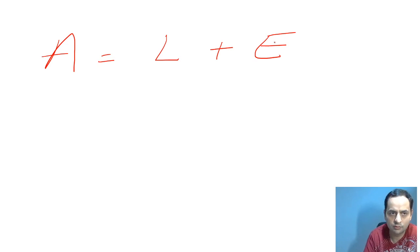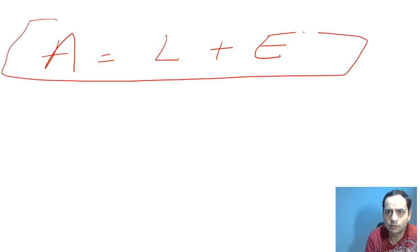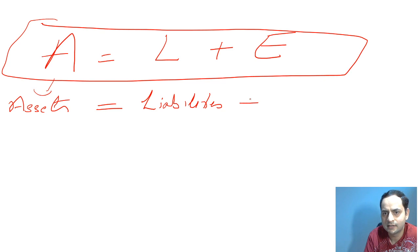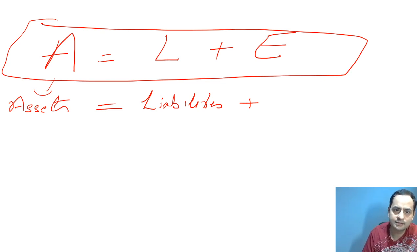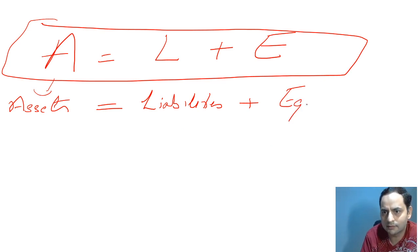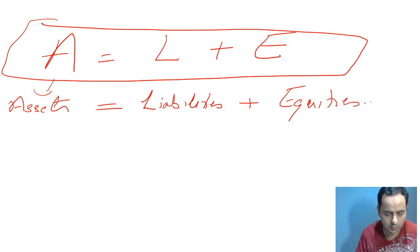Everything in the balance sheet should summarize into this equation. A is the assets of a company. L is liability - all its liabilities, whether bonds, short-term debt, or any kind of debt. And E is equities - these are the shares which a company issues to bring in more money.